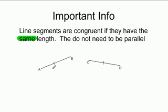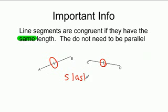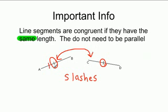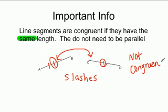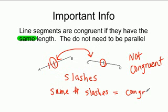Looking at line segments AB and CD, you can see that AB and CD are congruent because of the slash mark in the middle. These slashes tell us that both of these lines are congruent because they have the same slash. This has one slash and one slash. If this had two slashes and this had one slash, that means they are not congruent. So the same number of slashes equals congruent. If they have a different number of slashes, they're not congruent.